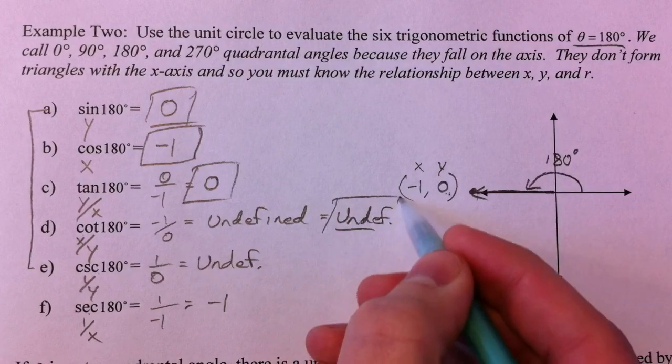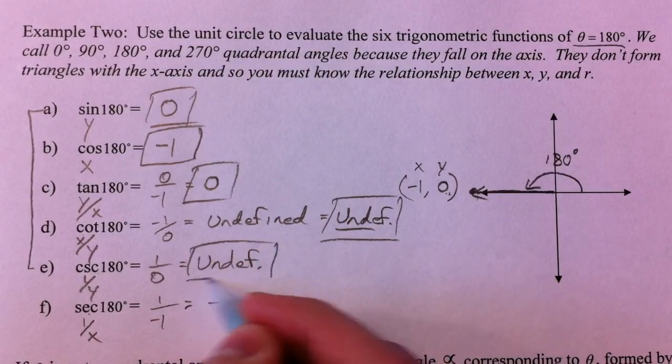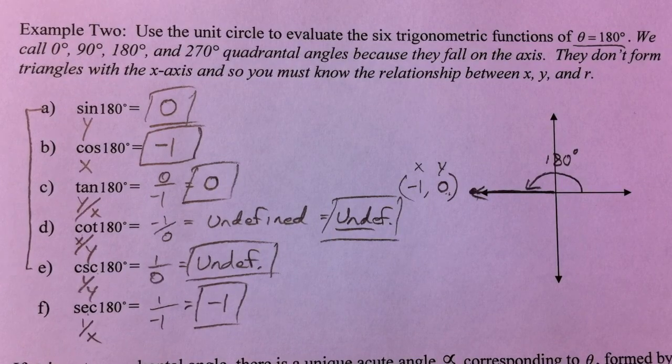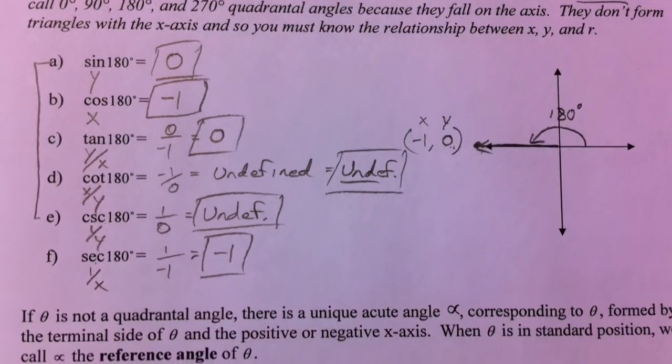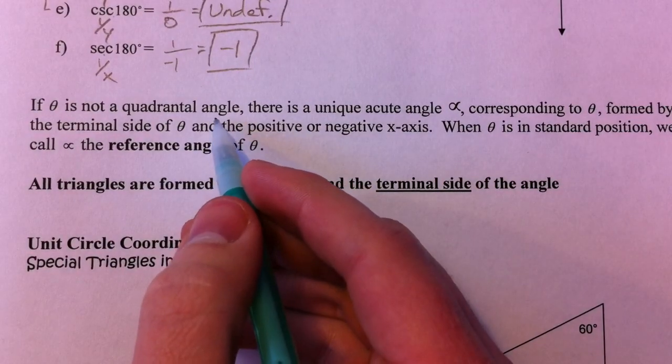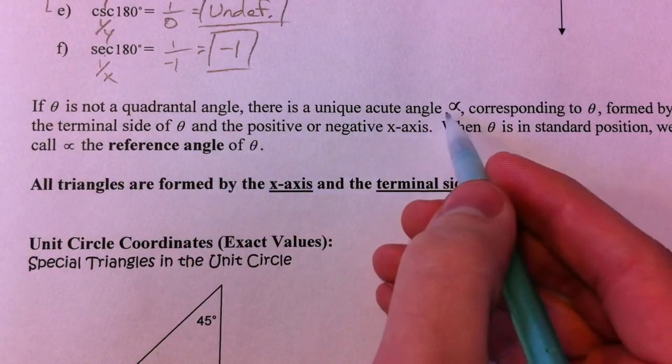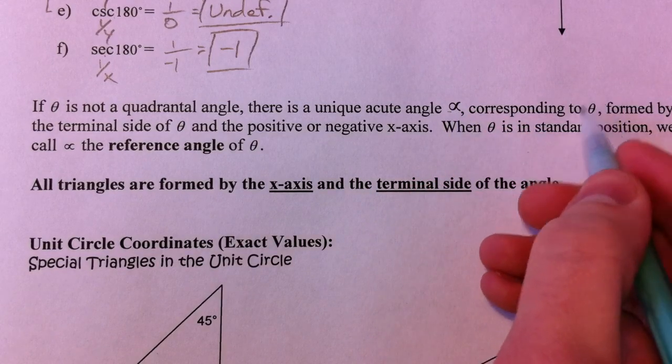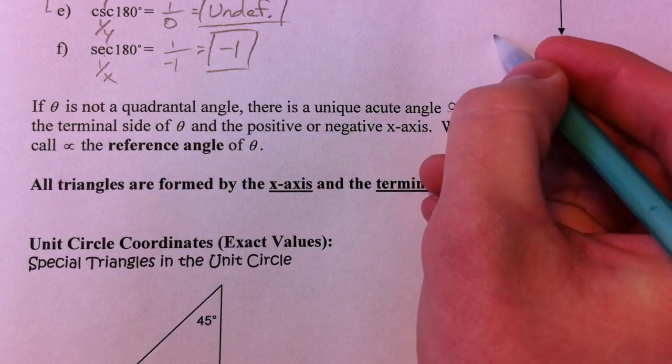So the things to keep in mind when you can't draw the triangle is that you have to know the relationship between x and y and r. So if it's not a quadrant angle, there's some angle, this is the Greek letter alpha, that corresponds to the angle, meaning this.